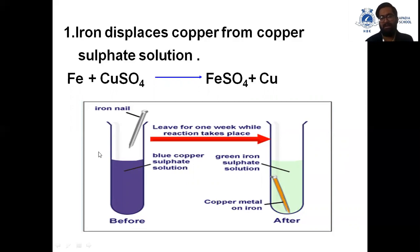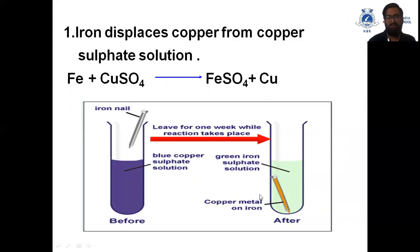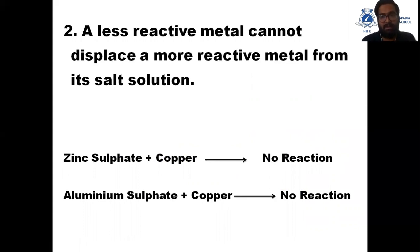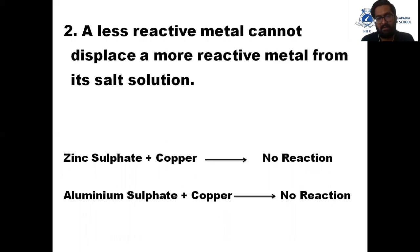After some time, the color of the copper sulfate solution fades out and a reddish-brown coating of copper forms on the iron nail. Now remember: a less reactive metal cannot displace a more reactive metal from its solution.